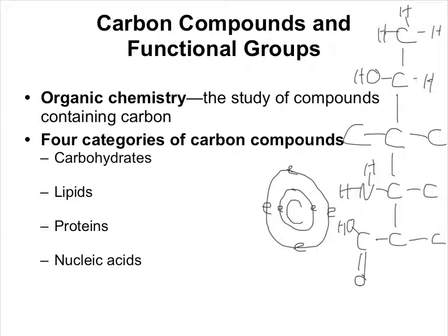There are many, many different classes of organic compounds, but there are four that are going to be really important for us in biology: carbohydrates, lipids, proteins, and nucleic acids. These are called the four biological macromolecules — 'macro' means big. The thing about carbon compounds is that you can get them to be really big and complicated, and that means they can start doing complicated things.